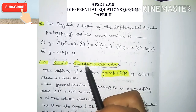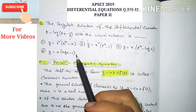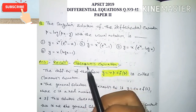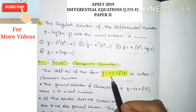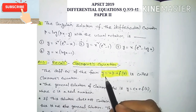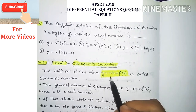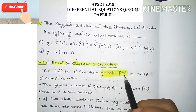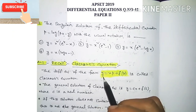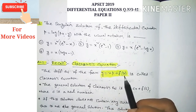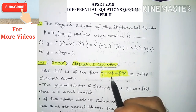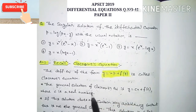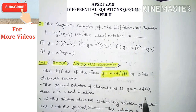Clearly this is a Clairaut's differential equation. The Clairaut's differential equation is of the form y = xp + f(p), which is called a Clairaut's equation. Here f is a function in terms of p. The general solution of Clairaut's equation is y = cx + f(c), where c is a real arbitrary constant.